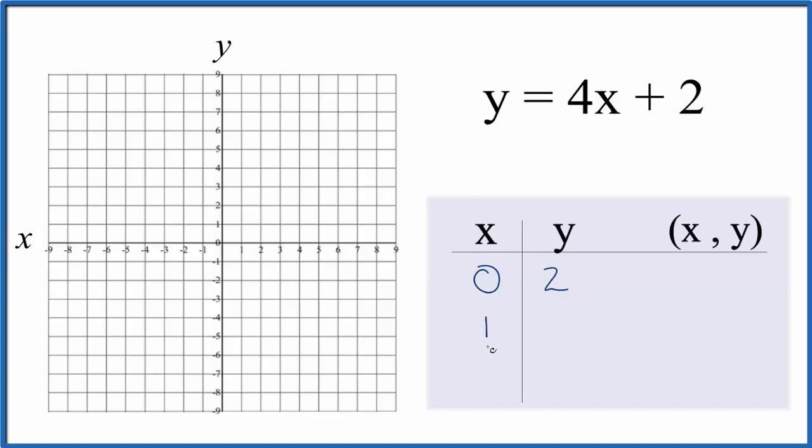Then how about 1? 4 times 1, 4, plus 2 gives us 6, and negative 1. So 4 times negative 1 is negative 4, plus 2, that gives us negative 2.